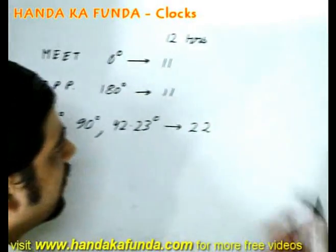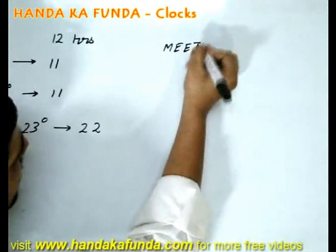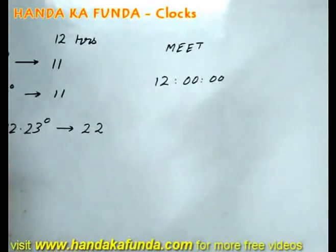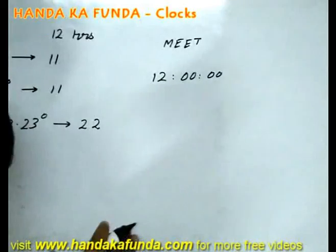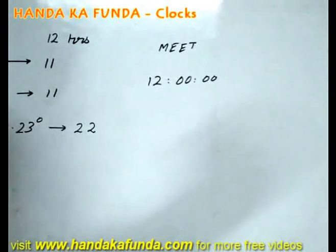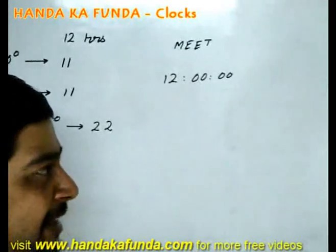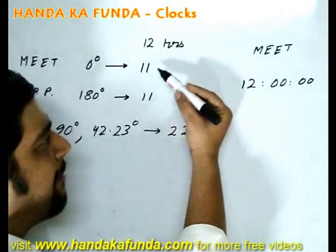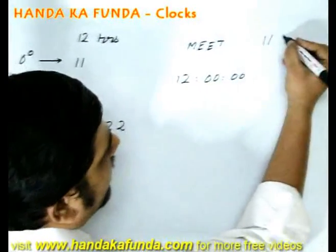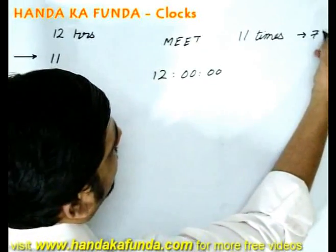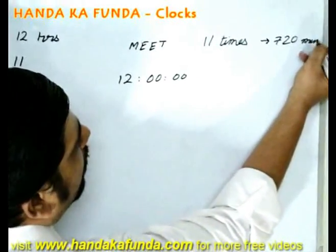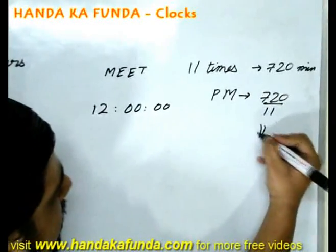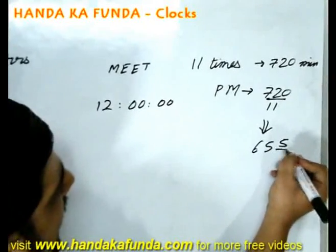We know that the meeting occurs exactly at 12 o'clock. When will the next meeting occur? Roughly around 1:05, because that is when the overtake between 1 and 2 will happen — but that is not exact. For the exact time, the meeting happens 11 times in 720 minutes. So per meeting it will take 720 divided by 11, which is 65 and 5/11 minutes.